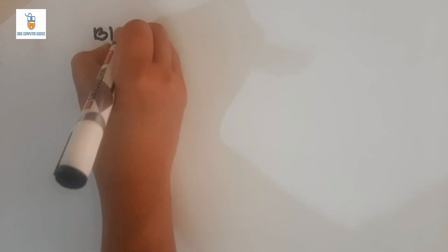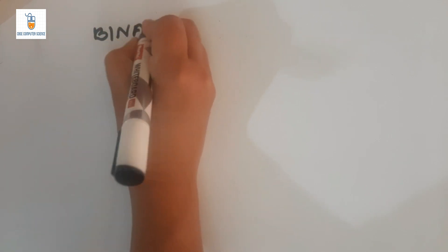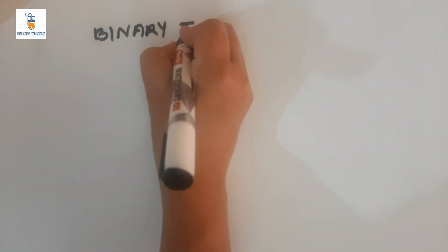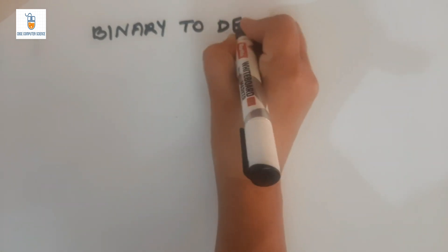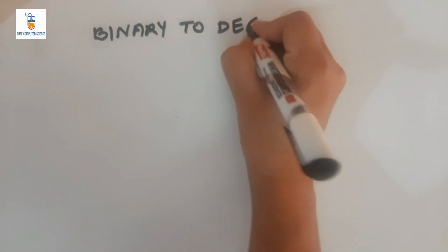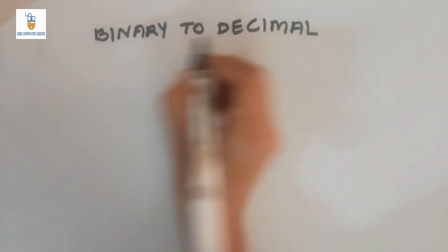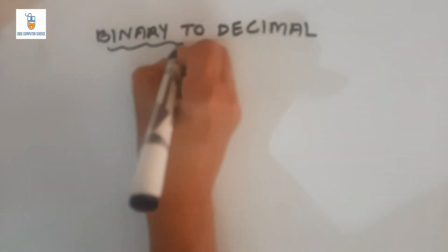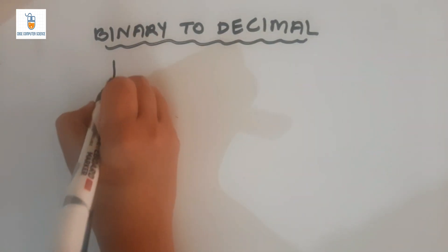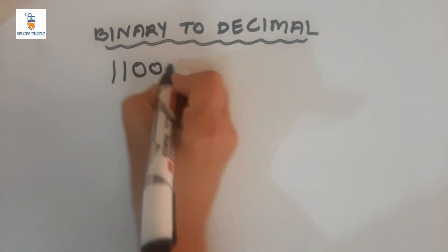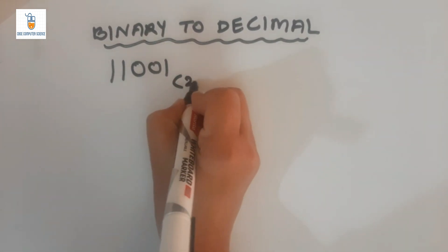Hello students. In today's video we are going to see how we can convert binary numbers into their equivalent decimal form, that is binary to decimal conversion. We know that binary numbers are those having base 2 and decimal numbers are those having base 10.